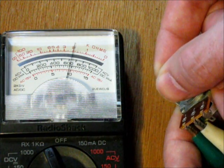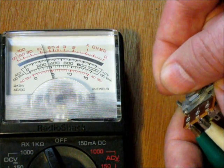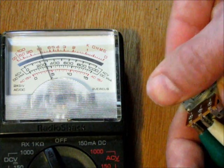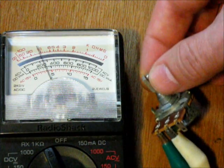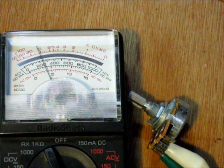So a variable resistor will adjust through its full range of resistance as you turn the dial. That's how to read a potentiometer with an analog meter.